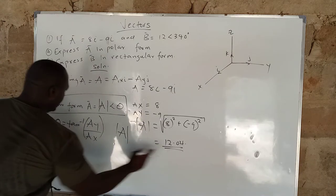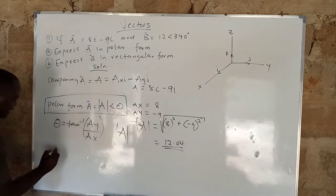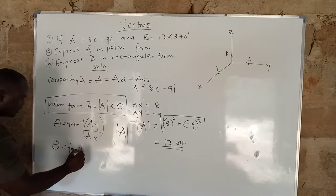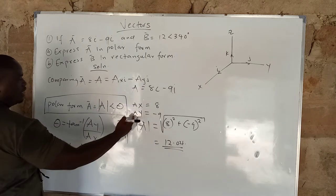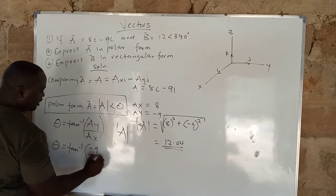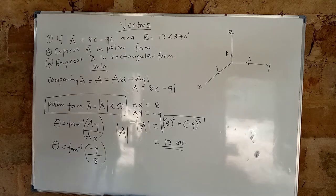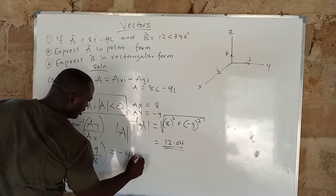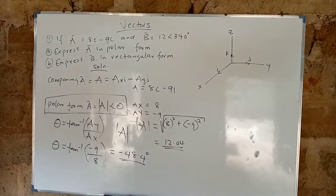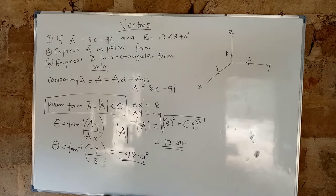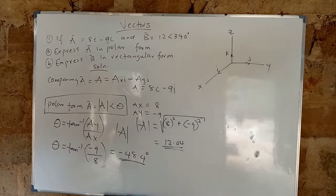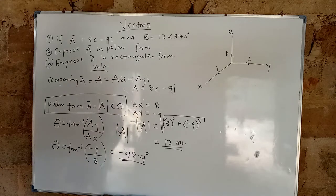The next thing is to get theta. Theta is the tan inverse of Ay over Ax. By comparison, Ay is minus 9 and Ax is 8. So tan inverse of minus 9 over 8 gives you minus 48.4 degrees.